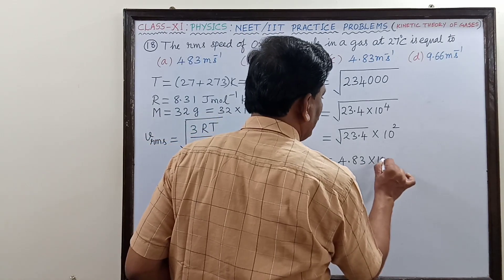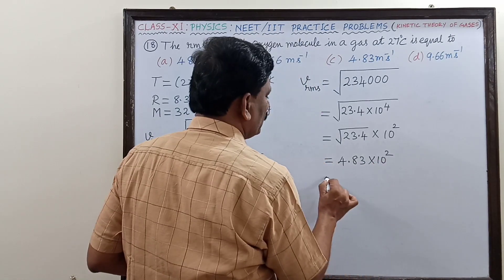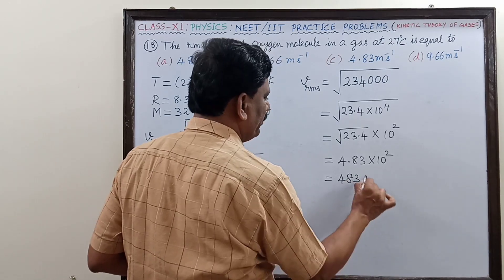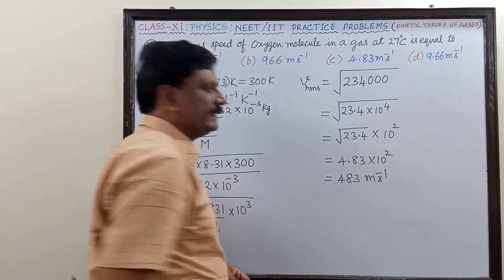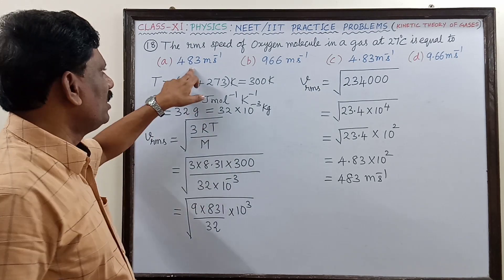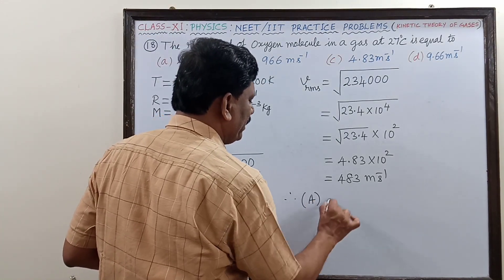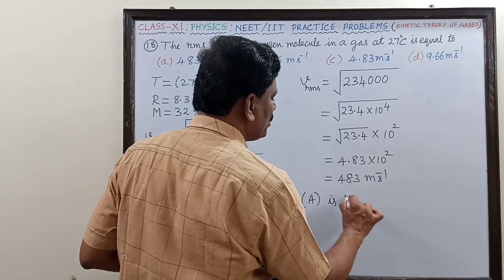So this must be equal to 483 meters per second. What is the option? A is the correct answer. Therefore, option A is the correct answer.